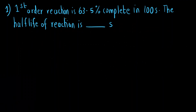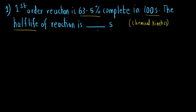Our first question is based on Chemical Kinetics. The question states that the reaction is a first order reaction which is 63.5% complete in 100 seconds. We have to find out the half-life of the reaction. For a first order reaction, T-half (half-life) is equal to 0.693 divided by K, where K is the rate constant.